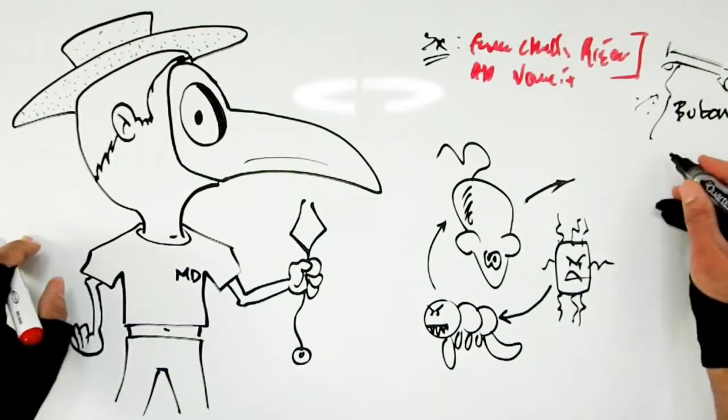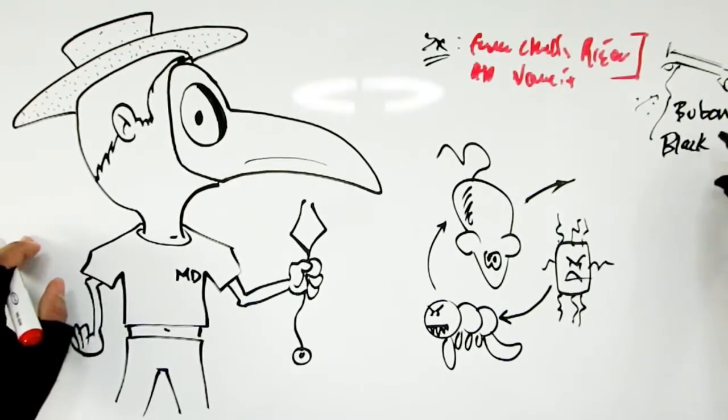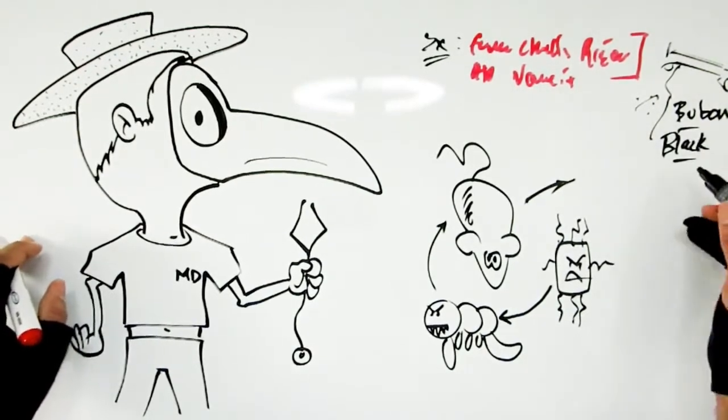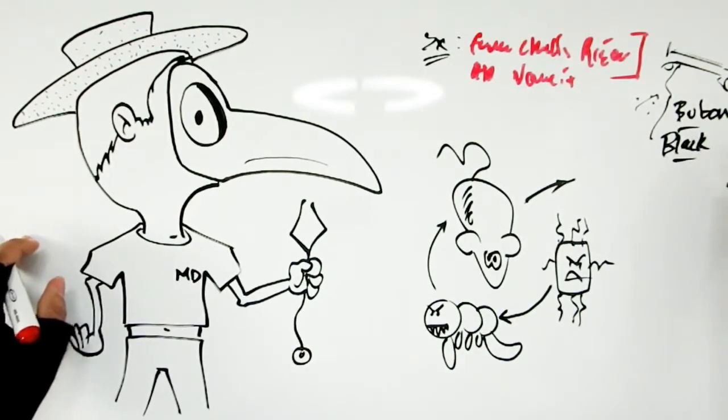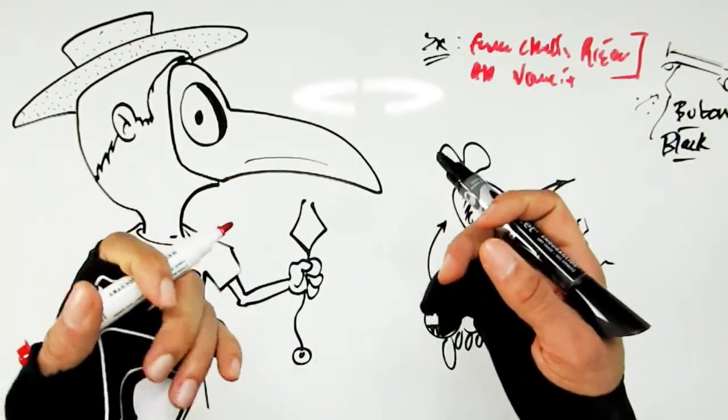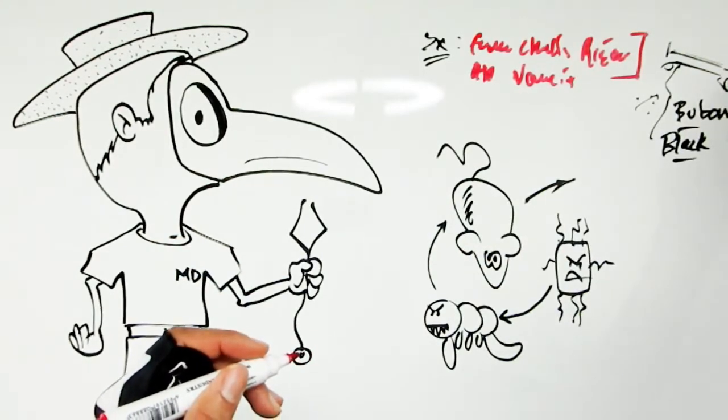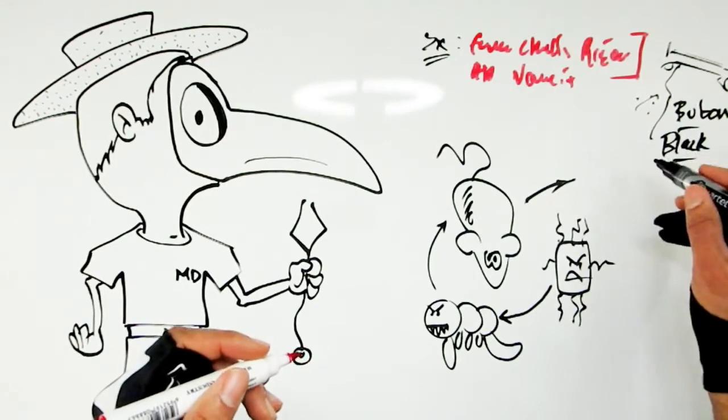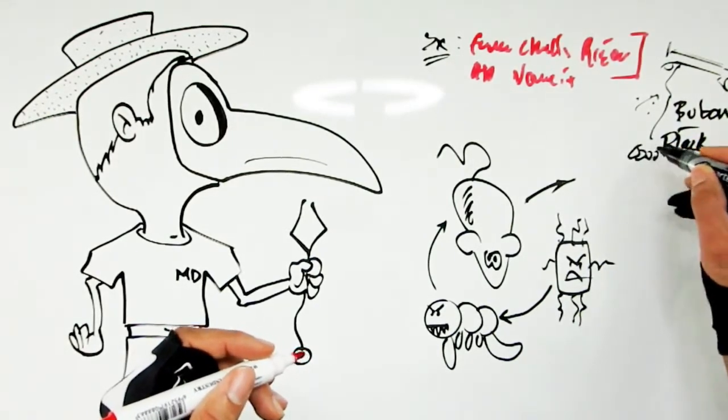Now the other name that we call it is also the black death. So why black? The reason for that is another stereotypical feature is gangrene of the extremities. So these people, their fingers would start to turn black, basically dying off. Their toes would start to die off, turn black. Their noses would turn black and start to fall off.